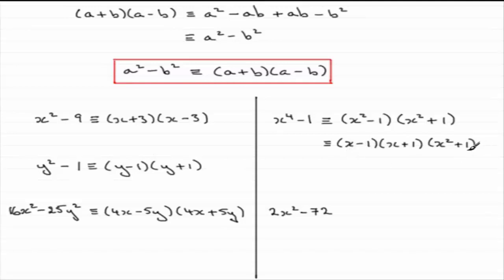So we must include x squared plus 1 as a factor, giving us three factors in total. Look at each of the factors and ask yourself again: do any of them factorise further? Well, x minus 1 has a minus sign, but it's not the difference of two squares because you cannot find something nice that squares to give x. So this is fully factorised — none of these factors factorise any further.